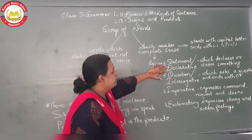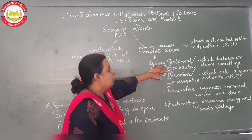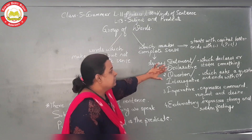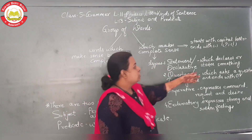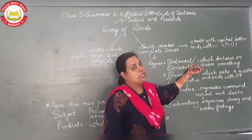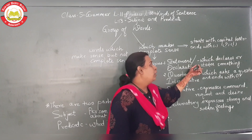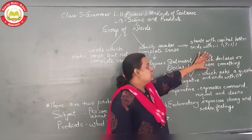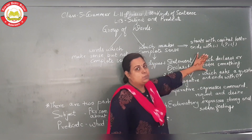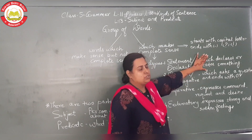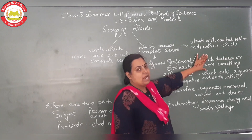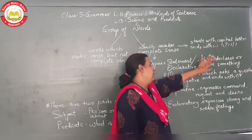The first type is a statement, or declarative sentence. This type of sentence states something, tells something, or declares something. It is a plain sentence and it ends with a full stop and starts with a capital letter.